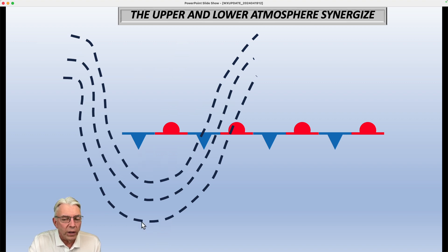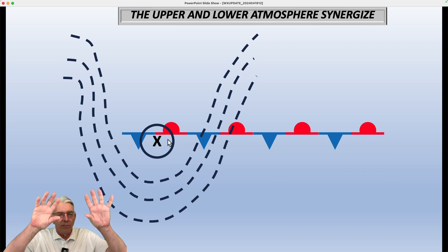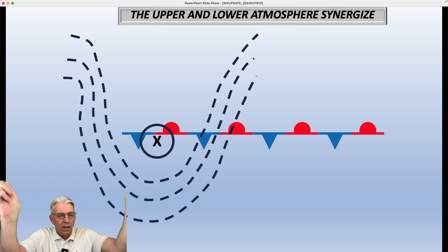And we oftentimes, with these things, talk about vorticity maximum, or maxima, depending on if there's more than one. And ahead of these vorticity maxima, you get divergence aloft. So if the air is spreading apart up here, it's got to be coming together in the low levels, and then you have rising motion and clouds and precipitation between those two processes that are going on.